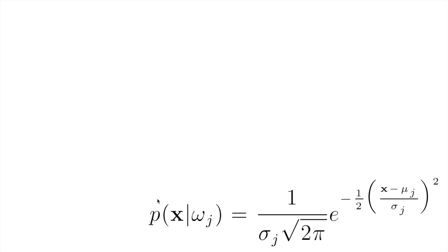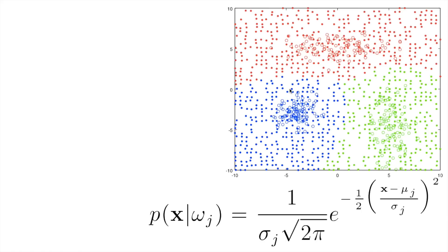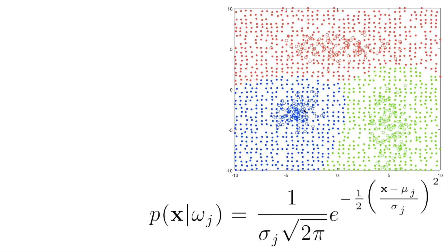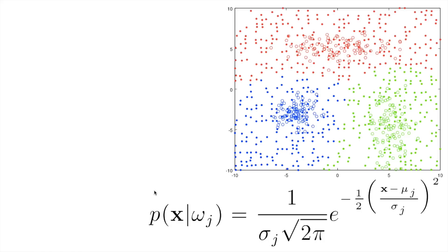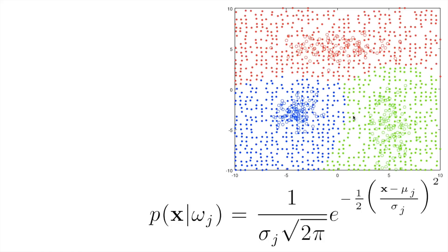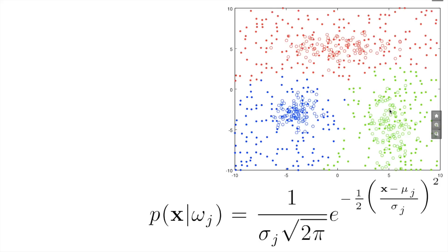This is the equation to compute class conditional density for each class. Given a certain feature vector, we compute the class conditional for one of the three classes using the traditional Gaussian equation, considering Sigma, the feature vector, and mu. Using the values shown previously, I simulated all the points in the neighborhood and computed this class conditional density for all points, which gives the decision limits among classes blue, red, and green.